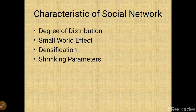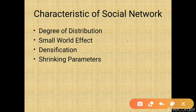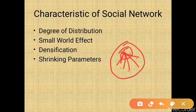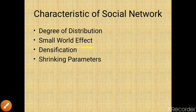Degree of distribution: real-world social networks tend to have a highly skewed distribution. A small percentage of nodes have a very high degree — they are highly connected. For example, like the spread of a virus such as coronavirus — if it is affected in an area, wide spread occurs, meaning heavy traffic for a particular node. That is known as degree of distribution.